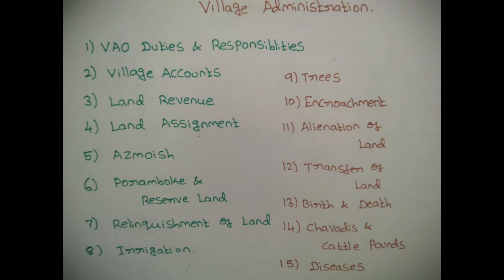So first is VIO Duties and Responsibilities. If you look at the VIO, you can see what they have to do. There is village accounts — an account department in the village accounts. There is a register in the village accounts: A register, B register, C register. There is a register and where they use it. There is land revenue — in Tamil, there is land revenue.